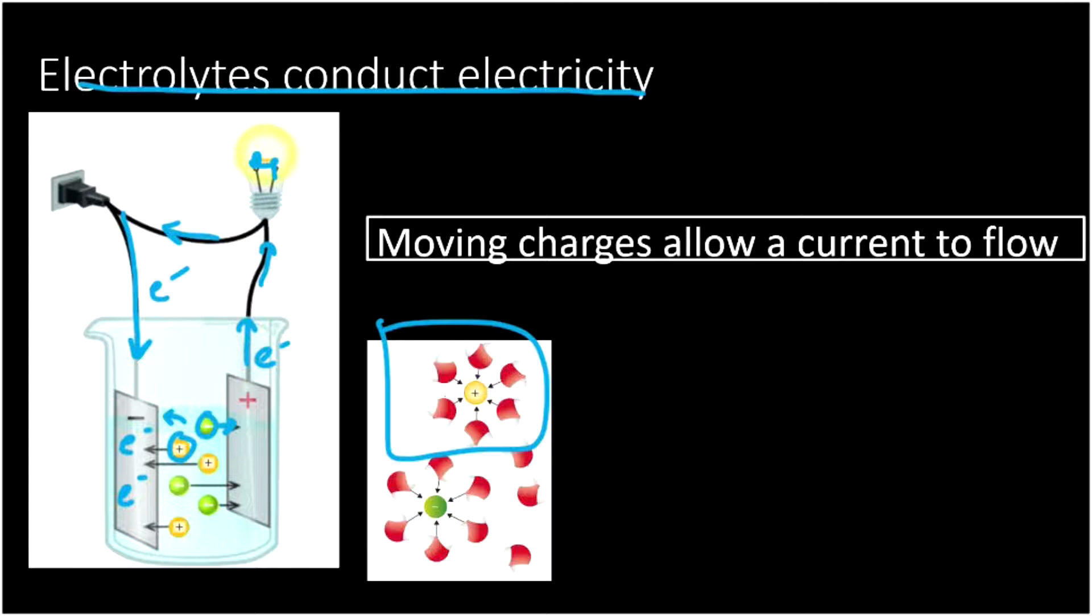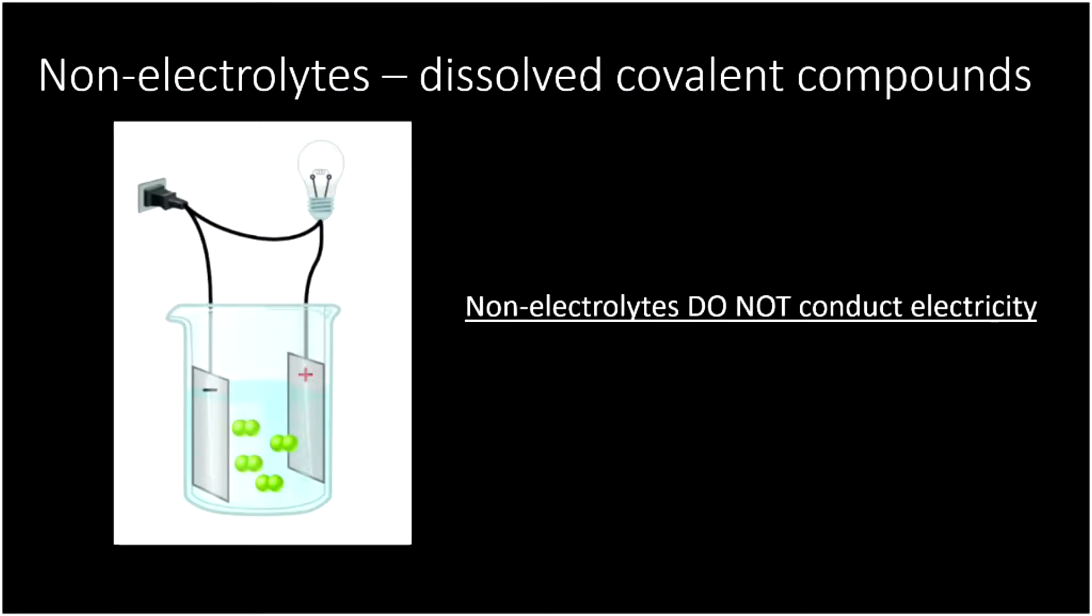But some solutions are not electrolytes. We call those, fittingly enough, non-electrolytes. What are they made out of? Dissolved covalent compounds. So anytime you have a covalent compound dissolved in solution, it's going to be a non-electrolyte and it won't conduct electricity. Here we still have our little system plugged into the wall and electrons still travel down to this negatively charged plate. But they can't go anywhere from there because in the solution, there's a bunch of molecules that are neutral. They haven't dissociated and they don't conduct electricity. So covalent compounds don't dissociate and they don't conduct electricity.